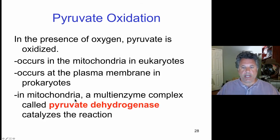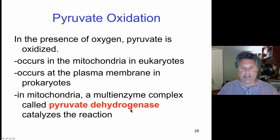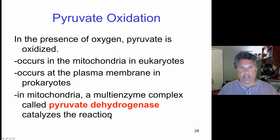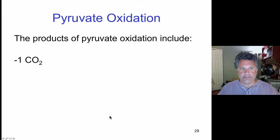In the mitochondria, the enzyme complex responsible for oxidizing pyruvate is pyruvate dehydrogenase. It consists of about 60 subunits of protein that come together — it's a large multi-enzyme complex — and that's what catalyzes the oxidation of pyruvate.